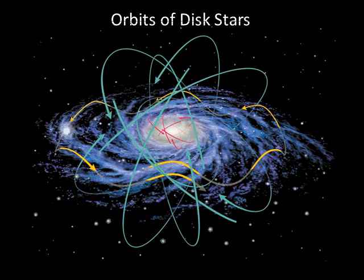Let's start with the disk stars. If you could stand outside the Milky Way and watch it for a few billion years, the disk would resemble a huge merry-go-round. The individual stars circle around the disk, but they bob up and down as they do, like merry-go-round horses. As a star orbits, if it overshoots and moves above or below the disk, the mass of the galaxy will pull it back. The stars near us take about 200 million years to make one orbit around the galaxy, and one up and down bob takes a few tens of millions of years.